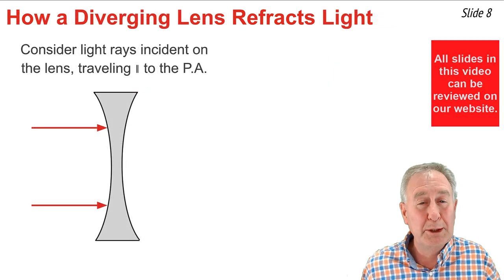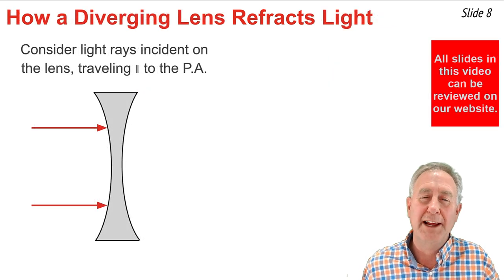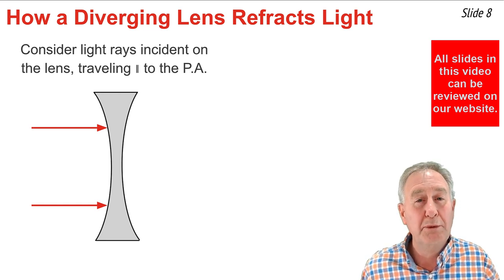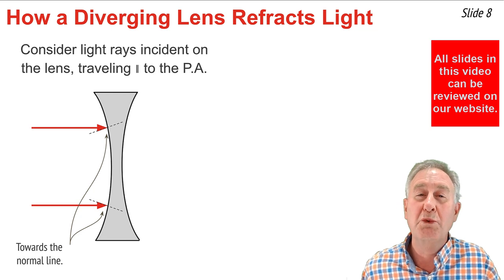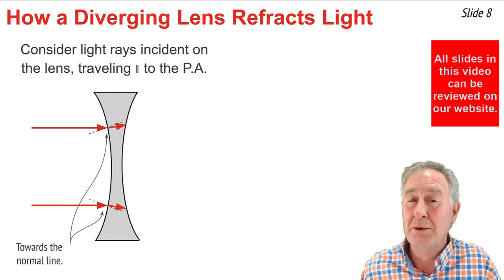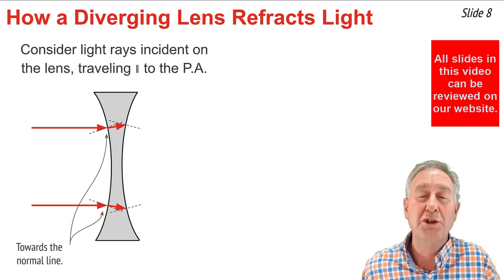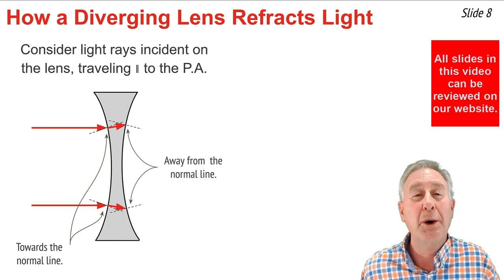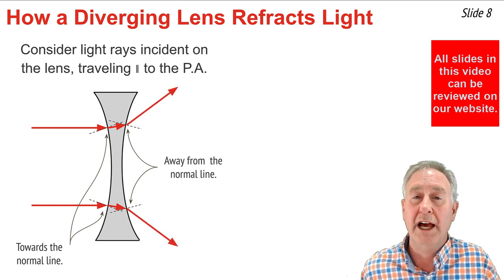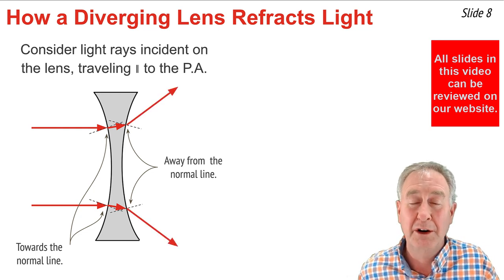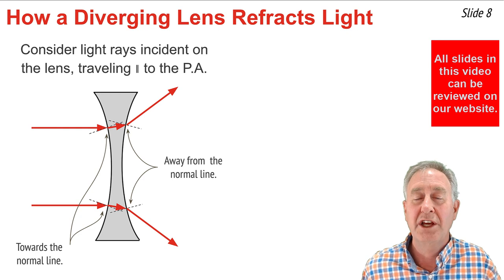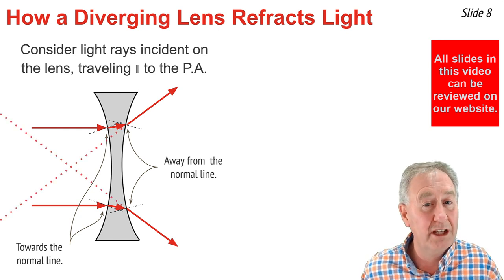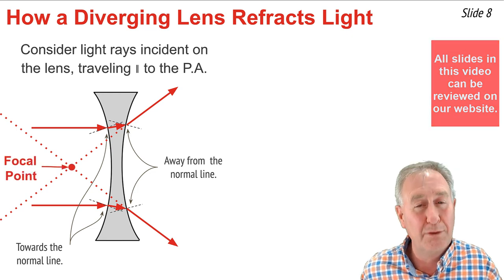Now let's take a similar approach to investigating the refraction of light by a diverging glass lens. We'll begin with light traveling towards the lens parallel to the principal axis, encountering a normal line and refracting towards that normal line, passing through the lens and reaching the opposite side, where the normal line can be constructed and we would expect the light to refract away from it. The light emerges from the glass traveling away from one another in a diverging fashion. However, we can take each of these diverging refracted rays and extend them backwards in space behind the lens, and we would notice that they intersect at a focal point.